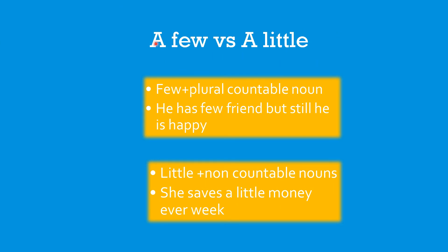Here, I'll give you a few examples on how you can use both countable and uncountable quantifiers. For example, 'a few' with plural countable nouns: 'He has few friends but still he is happy.' This is countable — how many friends do you have? You can count. So we can use 'few' here.